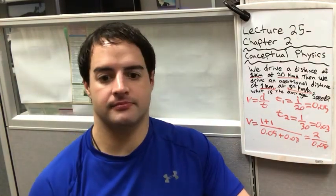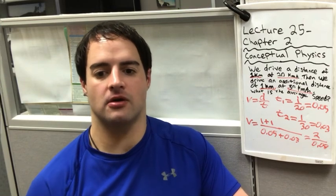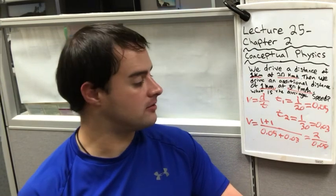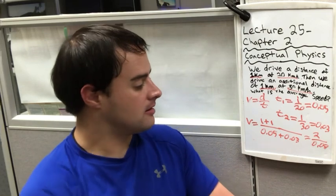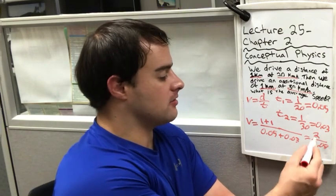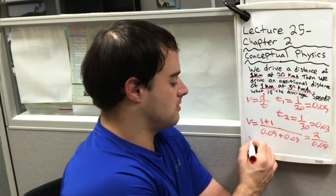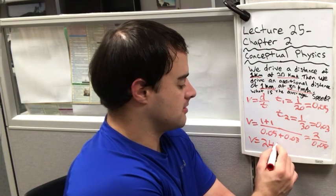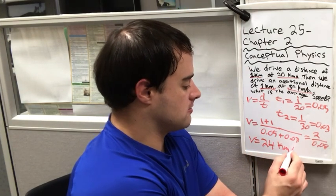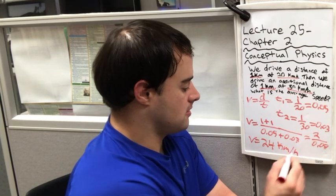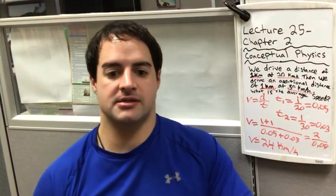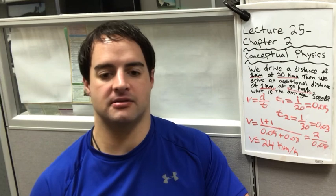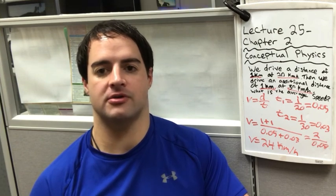Now, you simply divide. 0.08 goes into two 24 times. So, the answer is that the average speed is 24 kilometers per hour.